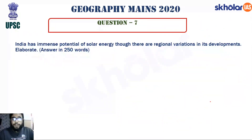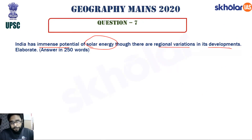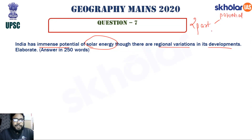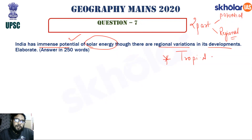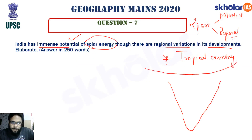The next question: 'India has immense potential of solar energy though there are regional variations in its development.' This question has two parts: first, explain the potential of solar energy in India; second, discuss the regional variations in its development across different states. The first point to mention is that India is a tropical country, with the Tropic of Cancer passing through the middle of the peninsula.